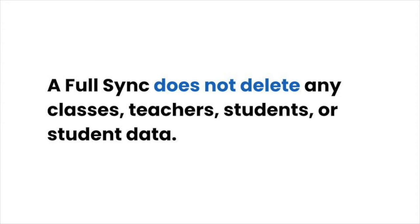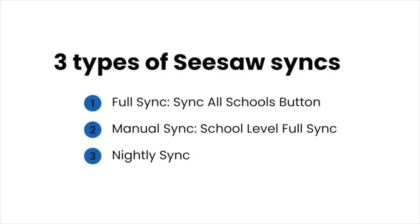A full sync does not delete any classes, teachers, students, or student work. The second type of sync is the manual sync. This is a school-level full sync. All Clever or Classlink data at the school where you run a manual sync will be reset to match exactly what is shared. You will use this to resolve sync errors or when you need to sync changes made to only one school without affecting other schools in your district.